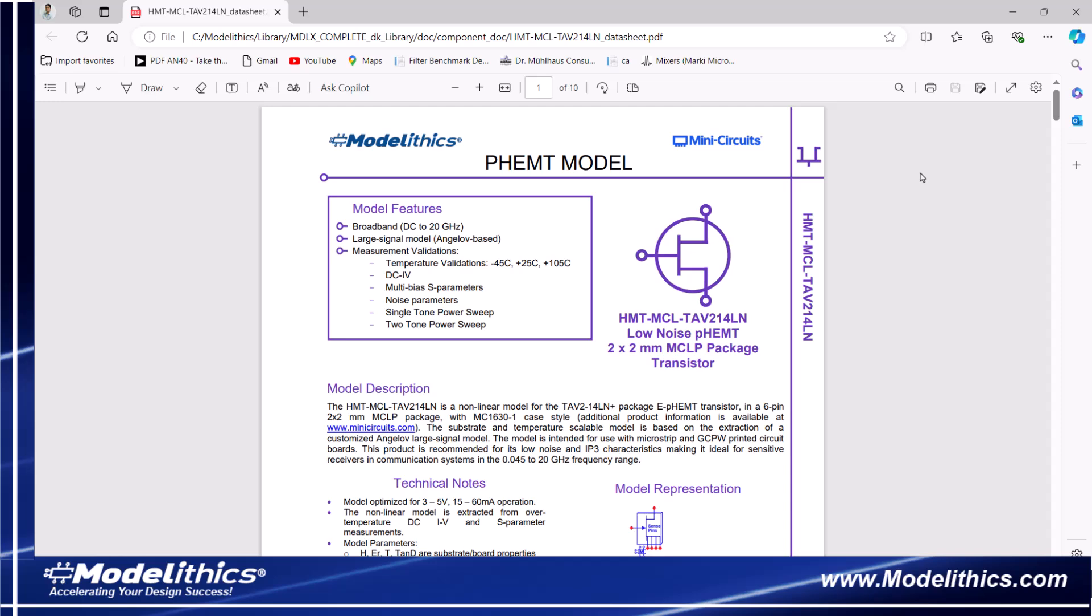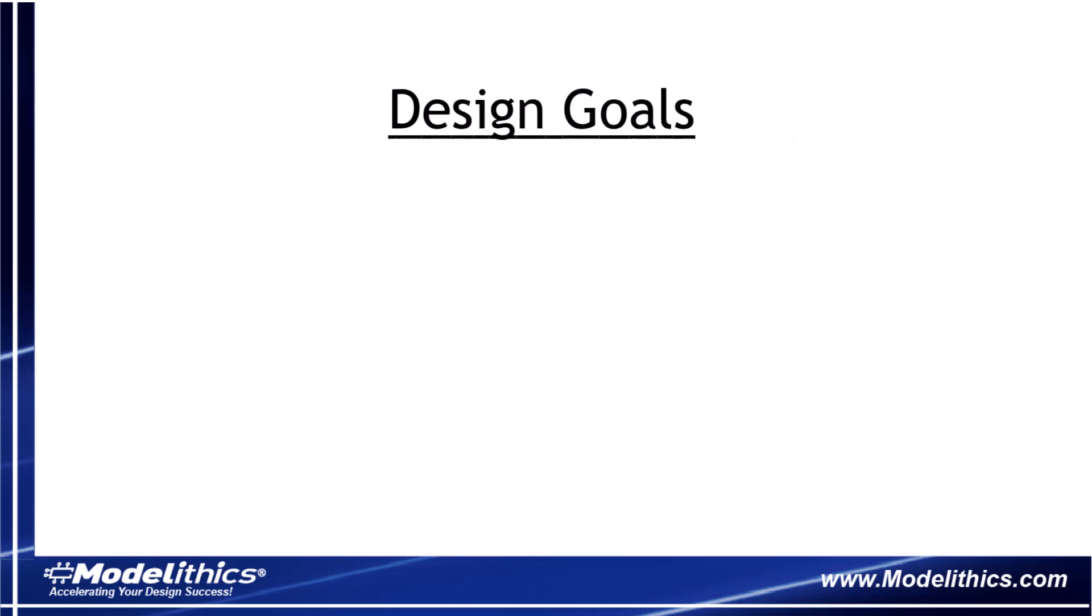Now let's talk about the design goals for this LNA. We want the LNA to operate over a frequency range of 4.9 to 6 GHz. Over this frequency range, we want to achieve at least 13 dB of gain with a noise figure less than 1 dB.